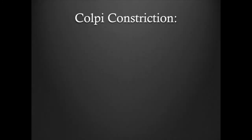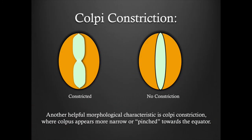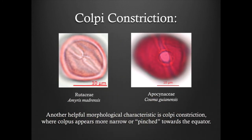Colpi constriction. Another helpful morphological characteristic is colpi constriction, where the colpis appears more narrow or pinched towards the equator. Here is an example of a constricted grain compared to a grain with no constriction.